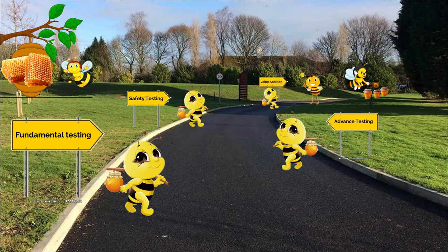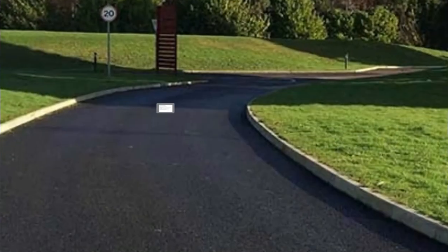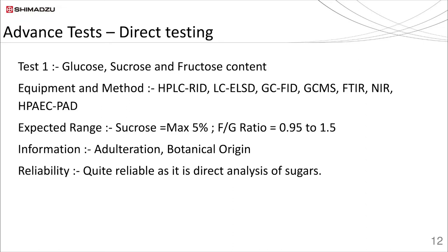Now moving to the advanced techniques available for more accurate and detailed analysis of honey. Glucose, fructose and sucrose constitute around 70% of honey sugars, so their detailed profiling and confirmation becomes necessary. There are several chromatographic techniques available to measure the percentage of these sugars in isolation, along with other saccharides. HPLC with RID detector is proven to be a simple chromatographic method, while GC and GC-MS can also give very satisfactory results, though sample derivatization is required before analysis.